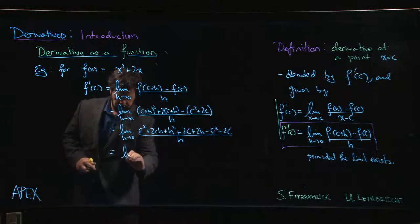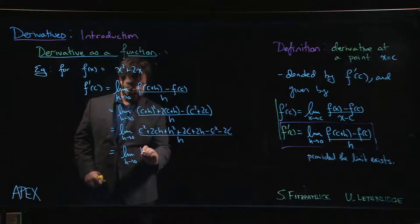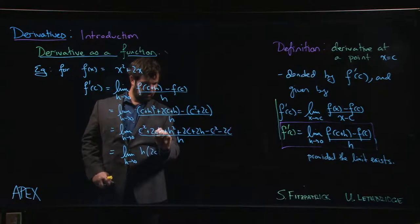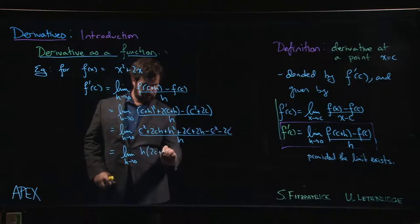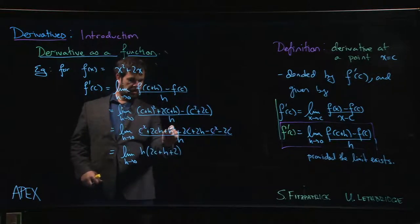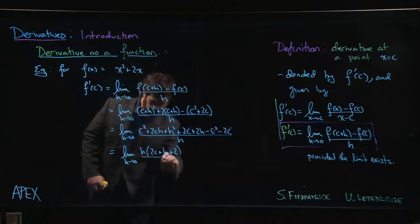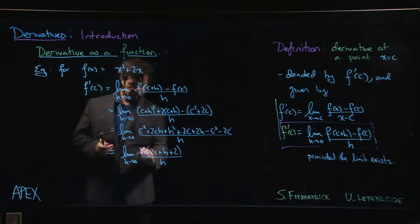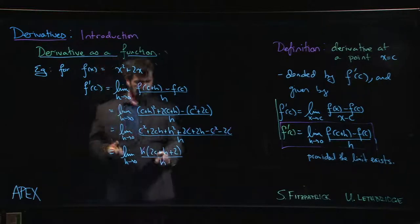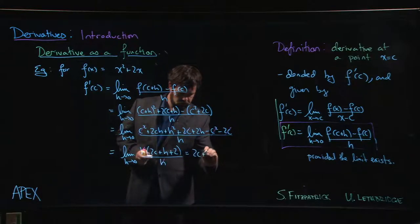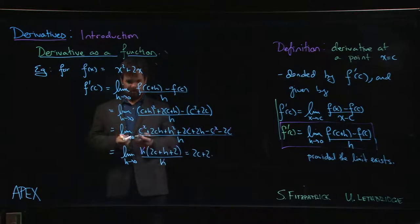So we get the limit as h going to 0. We have h times, so we have 2c from here plus h from here plus 2, h out of there, out of there, out of there, over h. Again, we can cancel our h's. We let h go to 0, which makes that guy disappear. And we have 2c plus 2 for our answer.